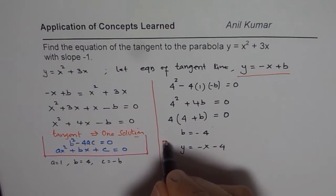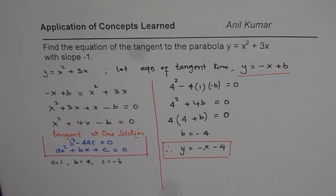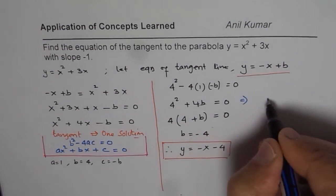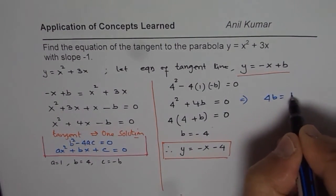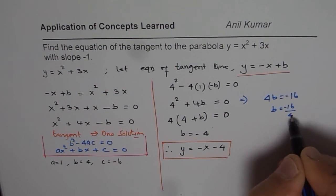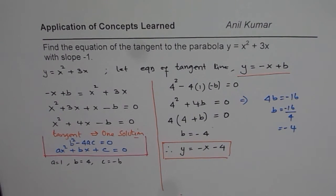So, that is how you can actually solve such questions, right? You could always from here also solve directly saying that 4b is equals to 16 and b is equals to 16, I mean minus, b is minus 16 by 4 which is minus 4. That's fine also, right? So, either way,